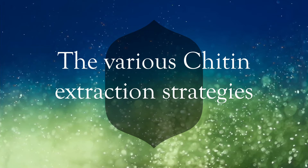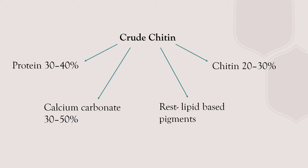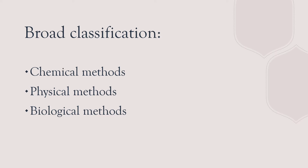Today we're going to have a look at extraction strategies for chitin. This is a broad overview, not going into a lot of depth. Chitin can be isolated from any source like crustaceans, fungi, or insects, and the composition varies with the species. Generally, it contains proteins, chitin, minerals — basically calcium carbonate — and some pigments.